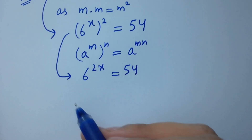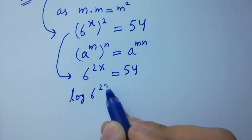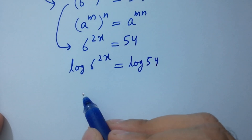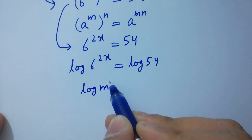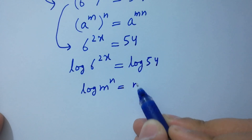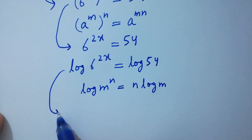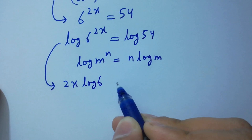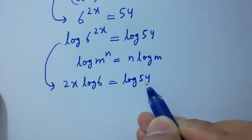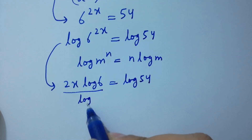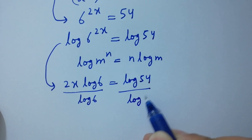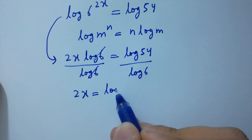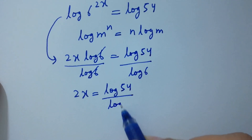Take log on both sides. Log 6 to the power 2x equals log 54. Using log m to the power n equals n log m, it will be 2x log 6 equal to log 54. Divide by log 6 on both sides — log 6 and log 6 cancel — giving 2x equal to log 54 over log 6.